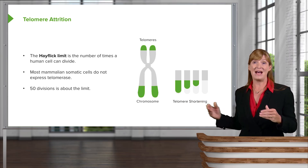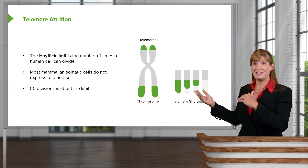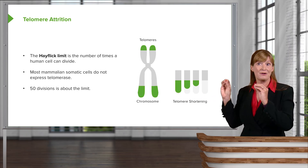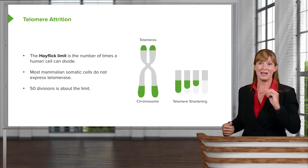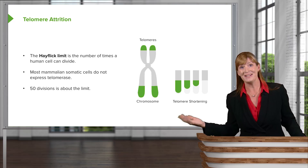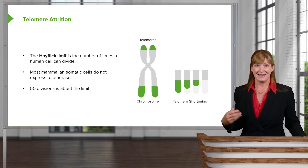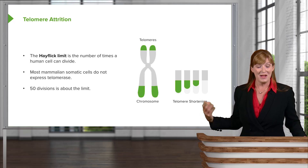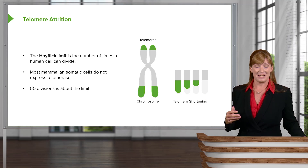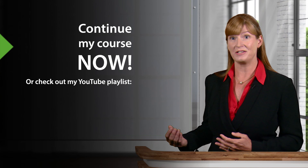After that, each cell division shortens the ends of the chromosomes until we start actually nibbling away at the genes located on the chromosome ends, which can have significant manifestations in the condition of the cell. Telomeric attrition is definitely associated with the aging cell.